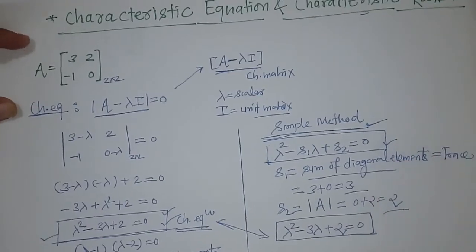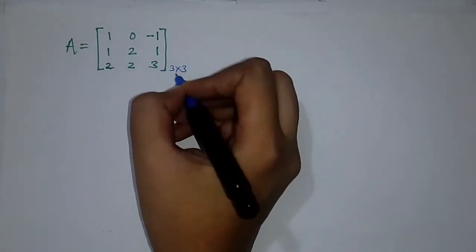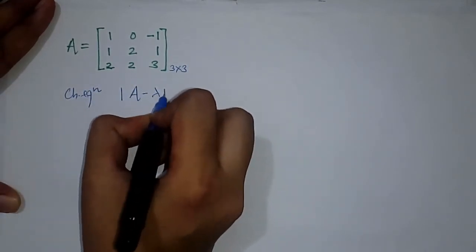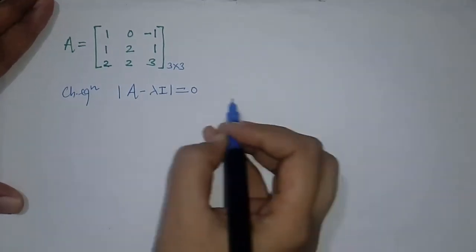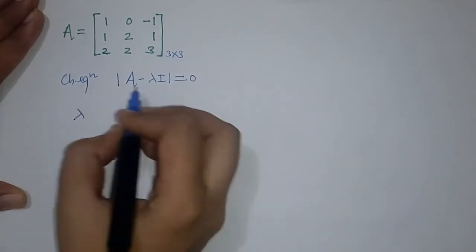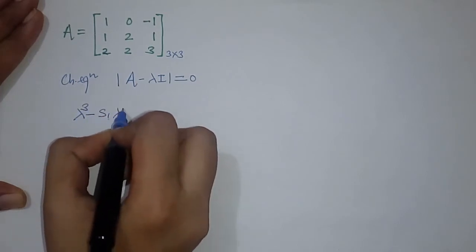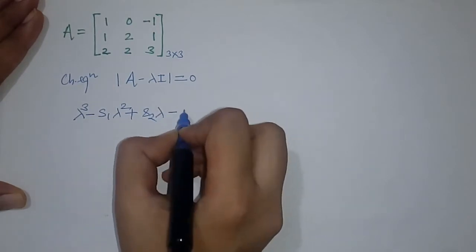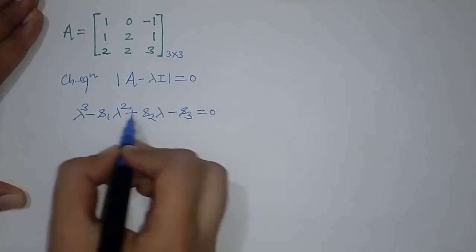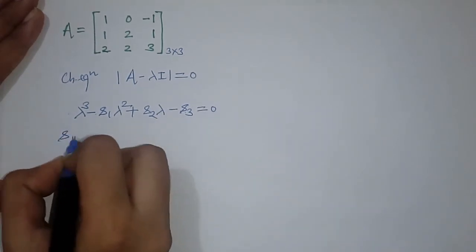Now we will find the characteristic equation for a matrix of order 3 by 3. The characteristic equation is still det(A minus lambda I) equals 0. In general, we write the characteristic equation as lambda cubed minus S1 lambda squared plus S2 lambda minus S3 equals 0, using alternate plus-minus signs throughout.